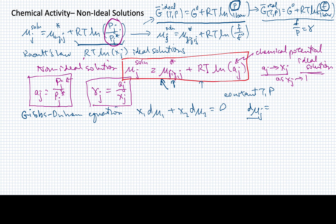If we write out the chemical potential for component j based on our equation, this part is constant, and RT is constant at constant temperature and pressure. So the differential of the chemical potential is just RT times the differential of the log of the activity. In effect, we're trading the differential of chemical potential for the differential of the log of activity, which gives us a big hint that these two serve much the same purpose in many thermodynamic relations.